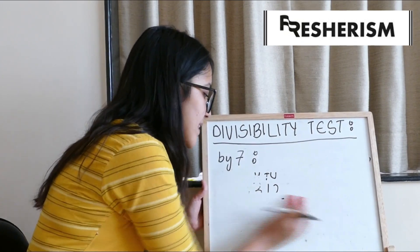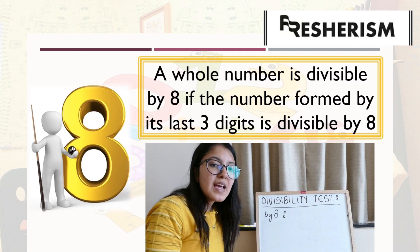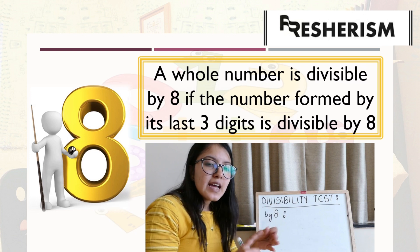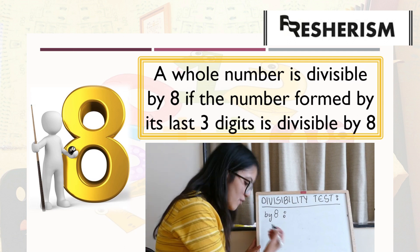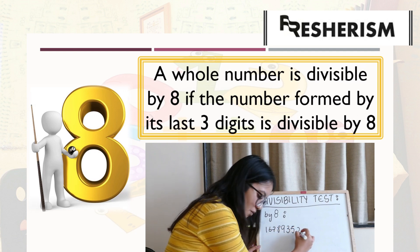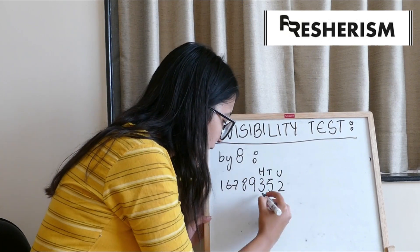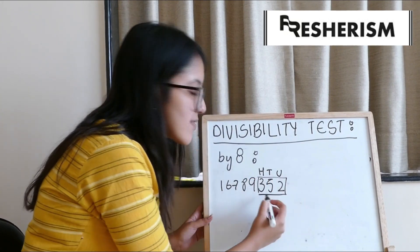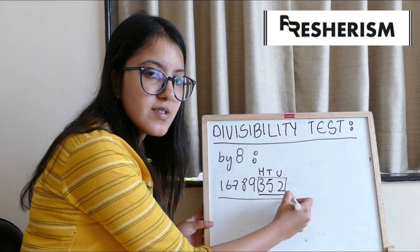Moving on to our next divisibility test: divisibility by 8. For any number to be exactly divisible by 8, the digits at its hundreds, tens and units place should be divisible by 8 — the total number formed by those 3 digits. For example: 16,789,352. The digits at its units, tens and hundreds place are 352. We need to check that 352 is divisible by 8, which it is. Hence, this whole number would be divisible by 8.